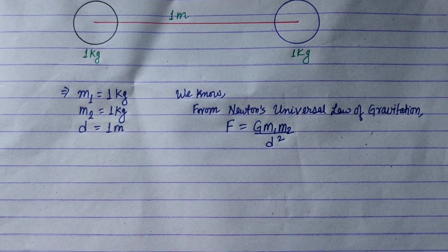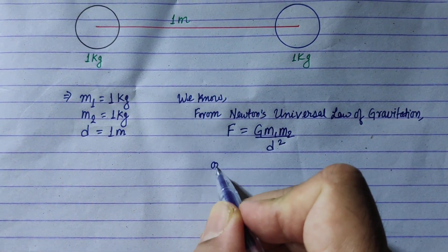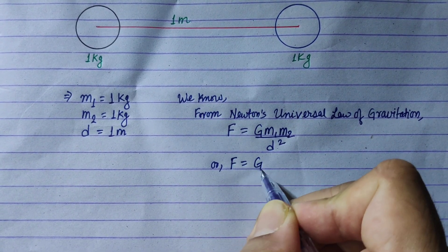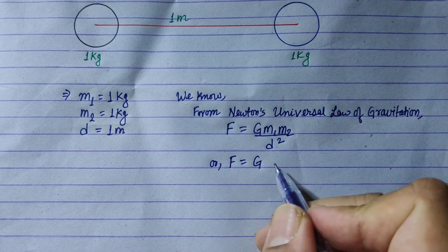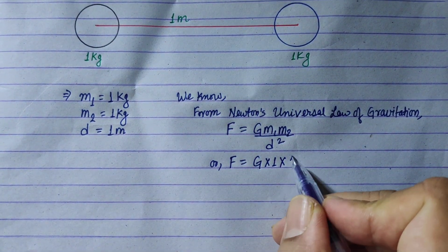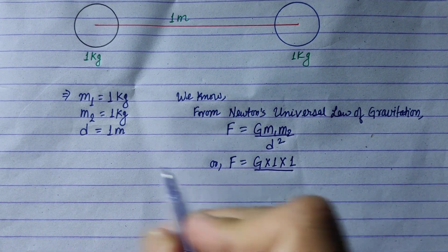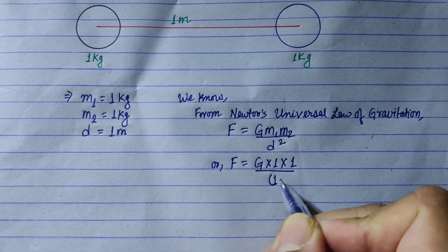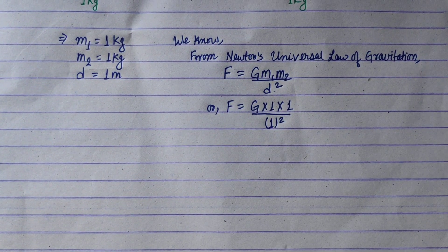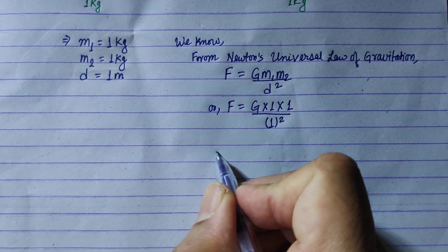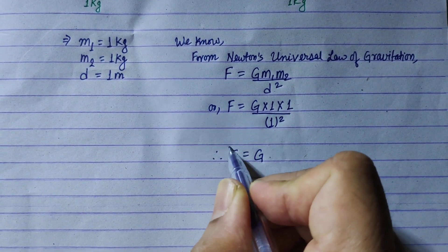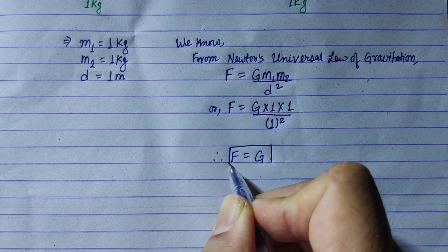So, applying the conditions: M1 is equal to 1, M2 is equal to 1, and the distance d is equal to 1. Now, let's simplify it. We will find that the gravitational force and the universal gravitational constant are numerically equal.